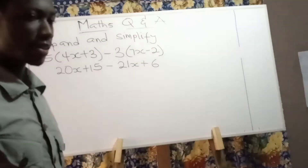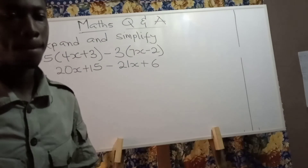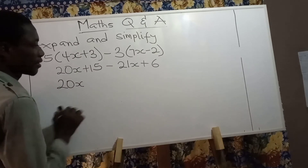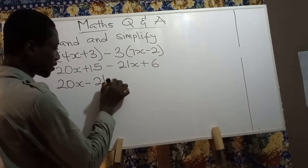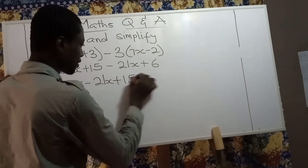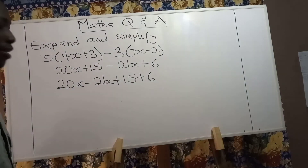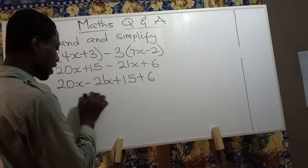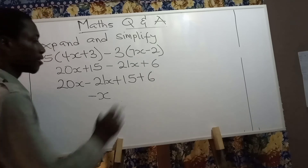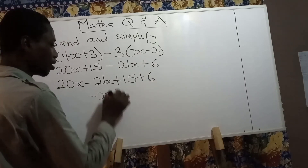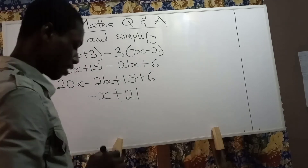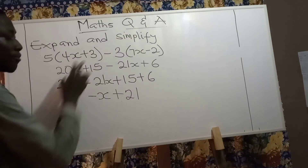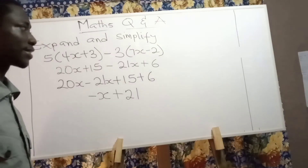Now that we've taken off the brackets, we are done with the expansion. So we have 20x minus 21x plus 15 plus 6. Now 20x minus 21x gives you negative 1x, so you write it as negative x. 15 plus 6 gives you positive 21. So the answer for expanding and simplifying 5 multiplying 4x plus 3, minus 3 multiplying 7x minus 2 is negative x plus 21.